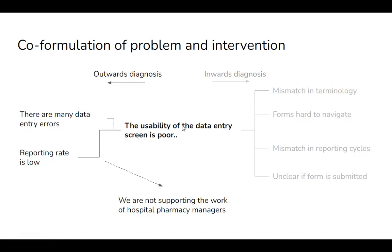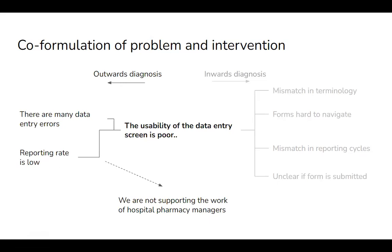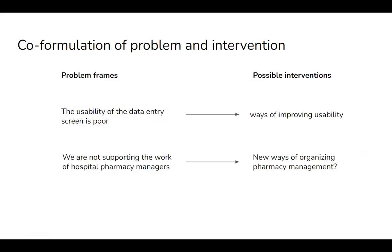We can go outward further — why is low data quality a problem? Because we need good data to make decisions. Each of those reframings highlights different types of interventions. This is loosely based on a project I was involved in in East Africa some years ago. We began with the usability problem, zoomed out, and realized we were actually failing to support the work of hospital pharmacy management managers. This was a health logistics project.